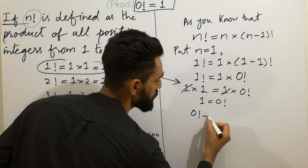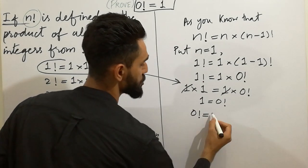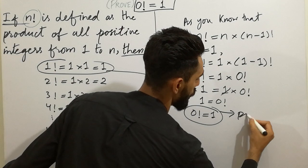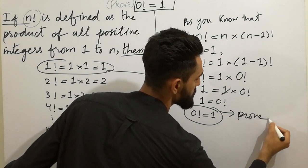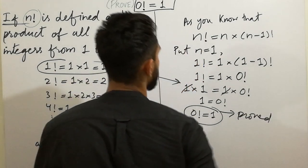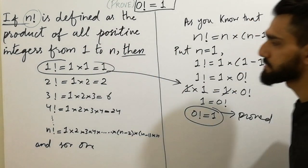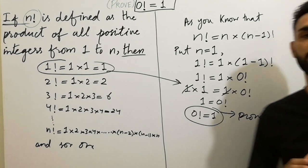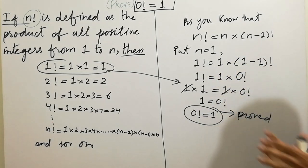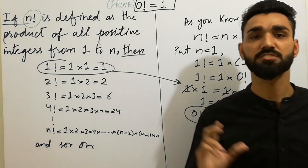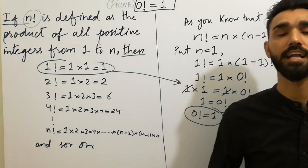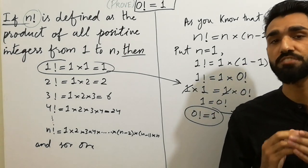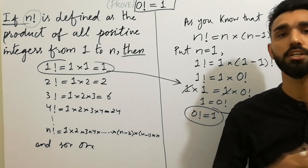So we have proved that 0-factorial is equal to 1. Very short-cut method — I've shown it in just a few seconds. Thanks for watching the video. If you like it, subscribe to my YouTube channel, press the bell icon and like button to get notifications for new lectures. Goodbye.